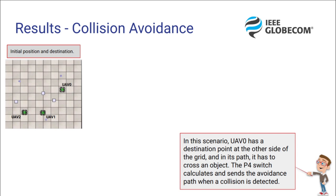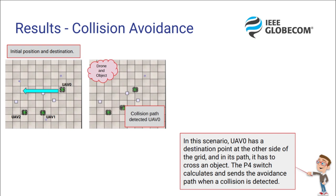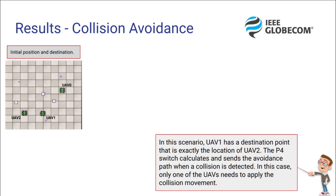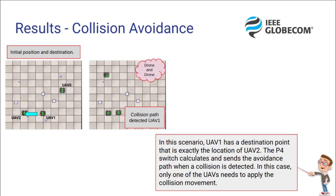The results. In the first scenario, UAV0 has a destination point at the other side of the grid, and in its path it is also crossed by an object. The P4 switch calculates and sends the avoidance message when the collision is detected. We can see that UAV0 is arriving nearby to an object, so a collision is detected. An avoidance movement is sent to UAV0 to avoid the collision and a new path is created. In the second scenario, UAV1 has a destination point that is exactly the location of UAV2. The P4 switch calculates and sends the avoidance path when the collision is detected, and one of the UAVs needs to apply the collision movement.